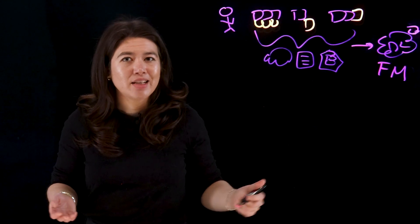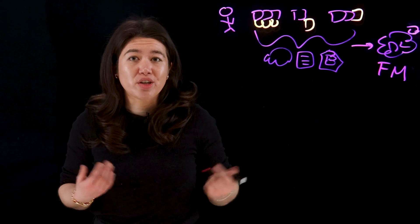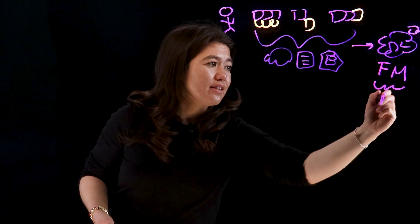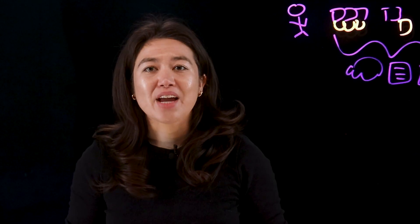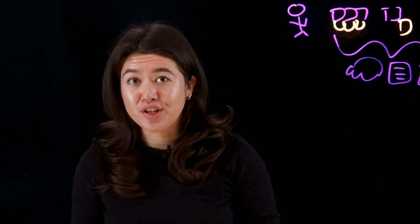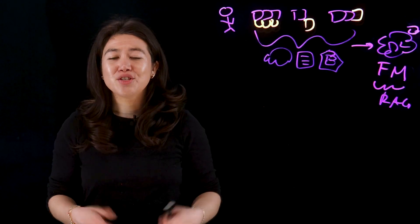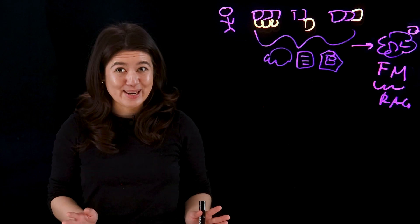So, how is this done? Let's look at Retrieval Augmented Generation, or RAG, as an example. RAG improves response accuracy by retrieving relevant information from a connected knowledge base and feeding it into the foundational model. This ensures precise, humanized answers based on up-to-date data.